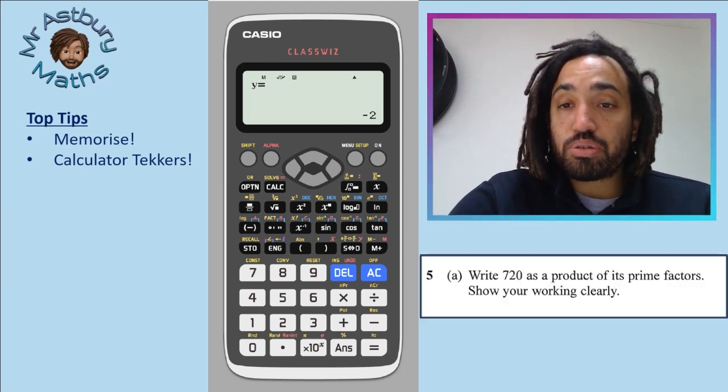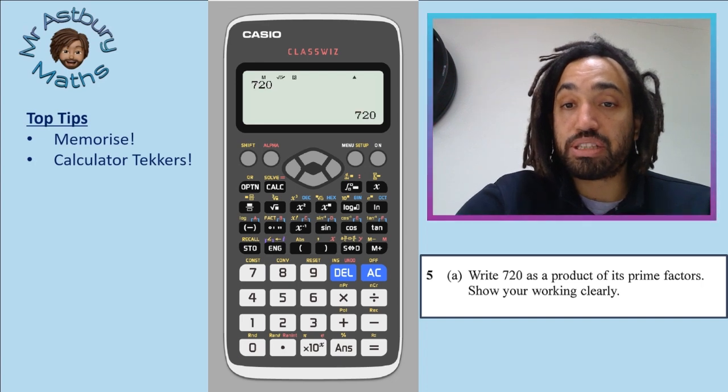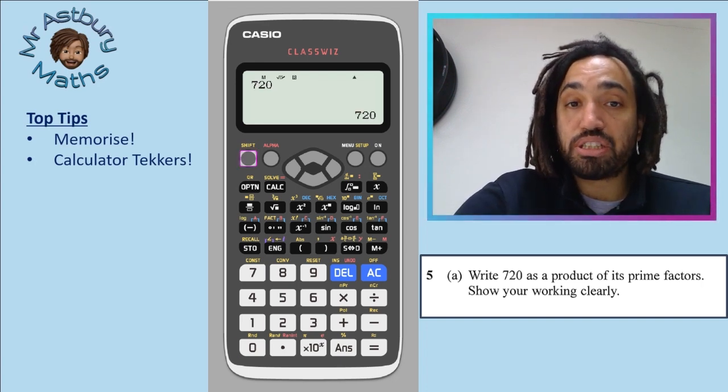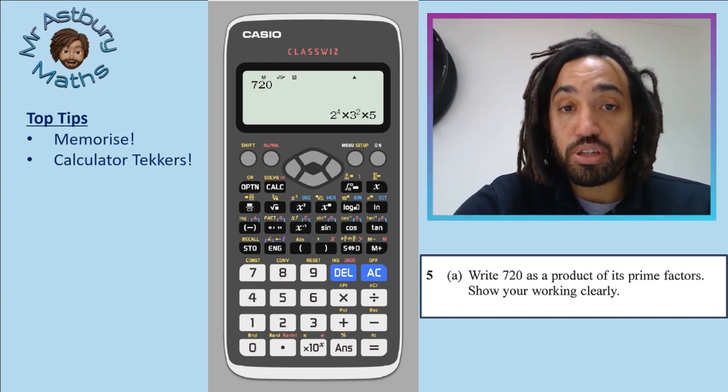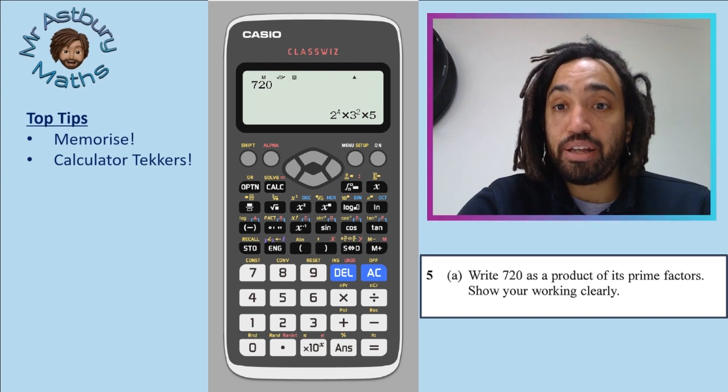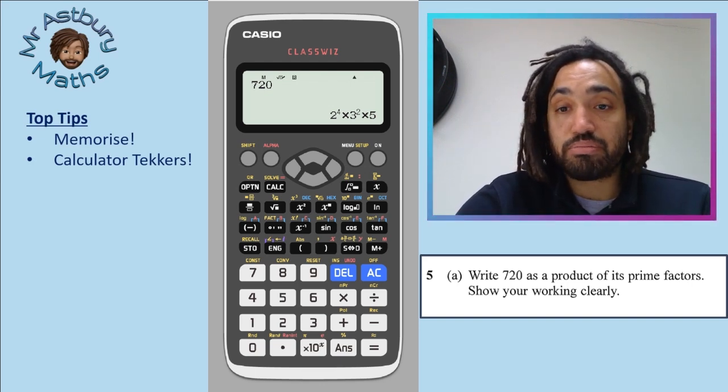And another little top tip, say for example you get this question here, 720, you can press equals. And then you can press this button here, which is just above these three dots. You press that one and it gives your number as a product of prime factors. Perfect.